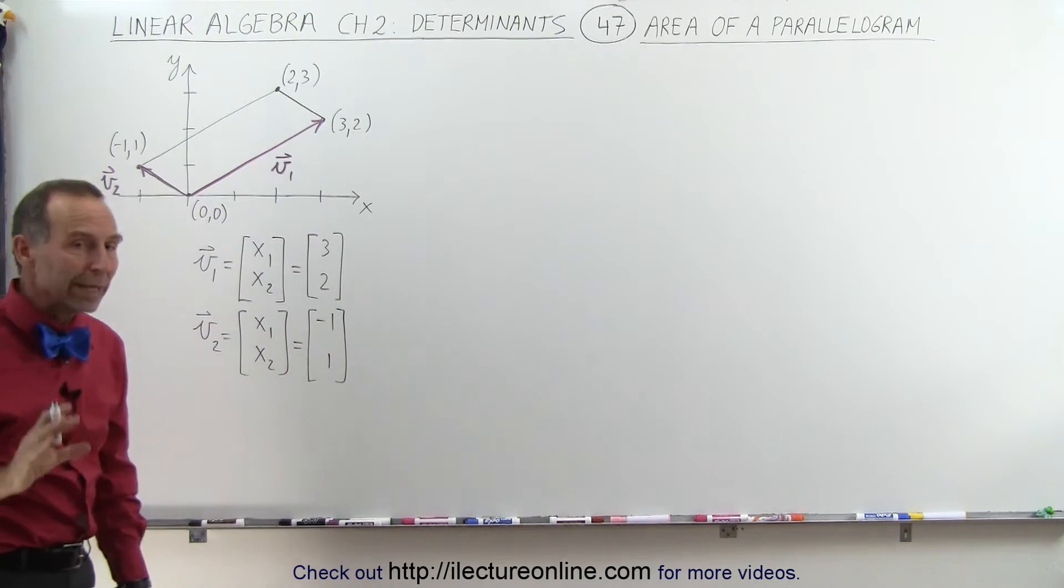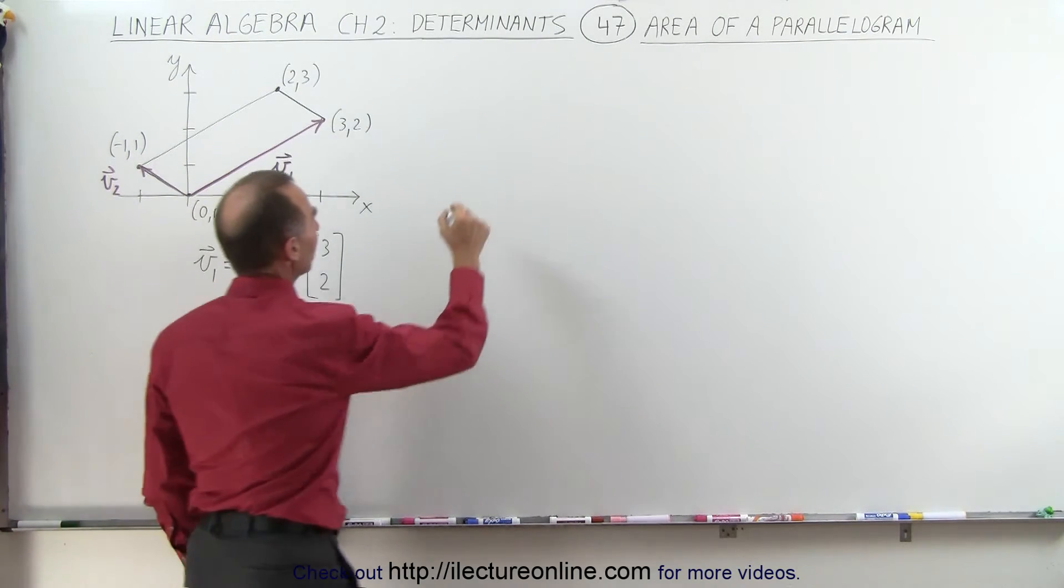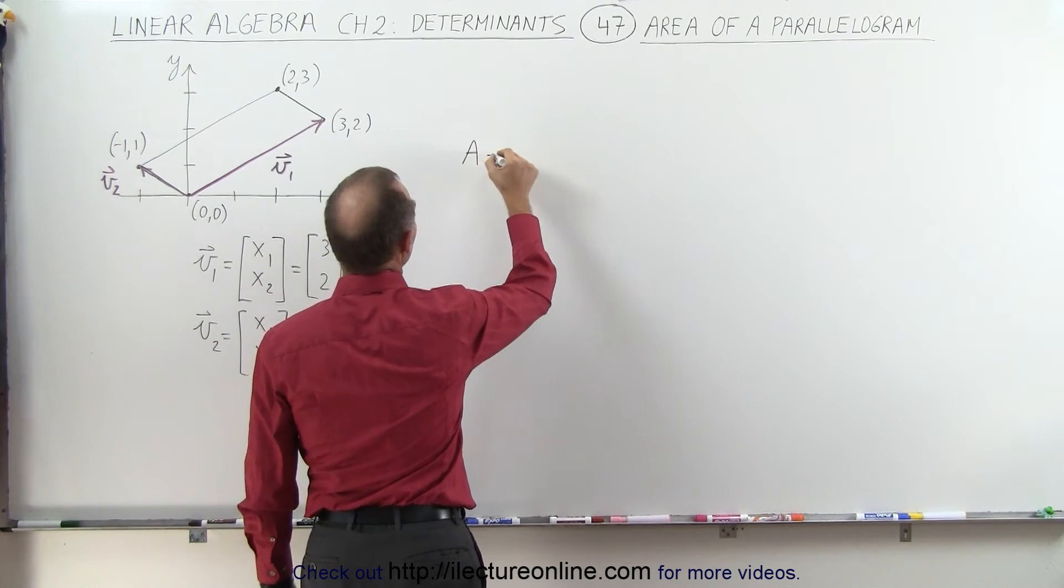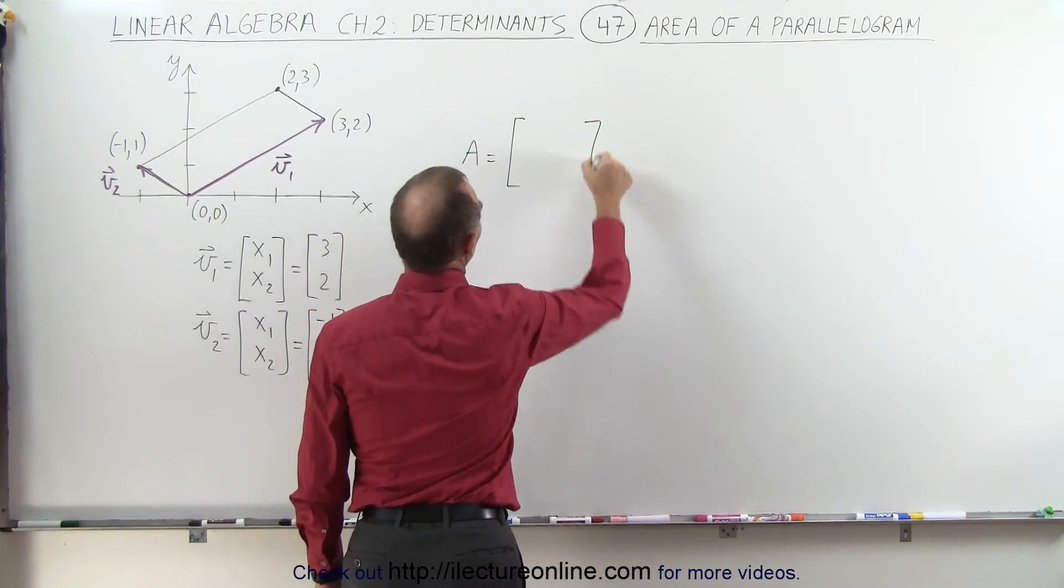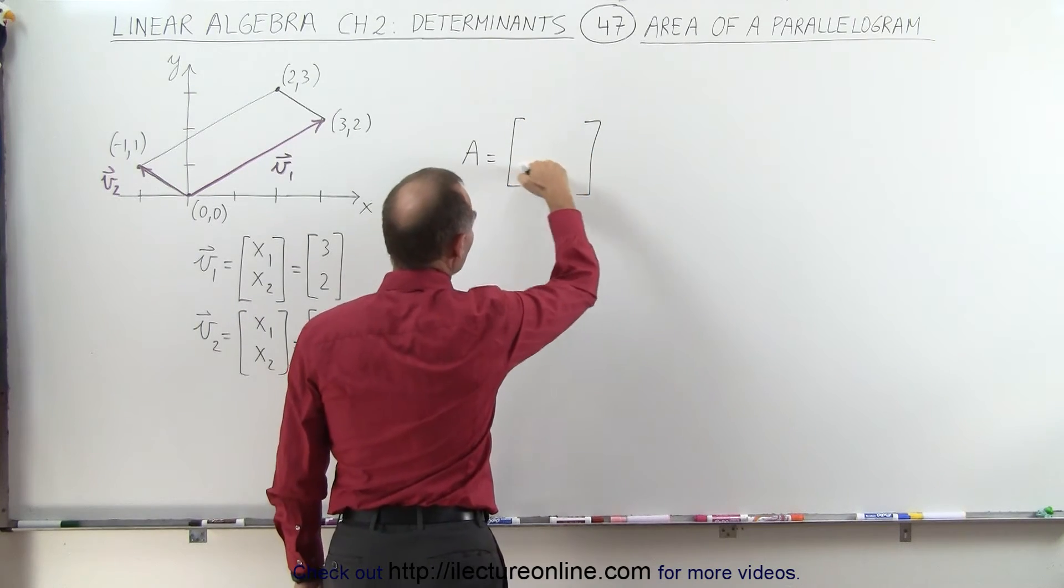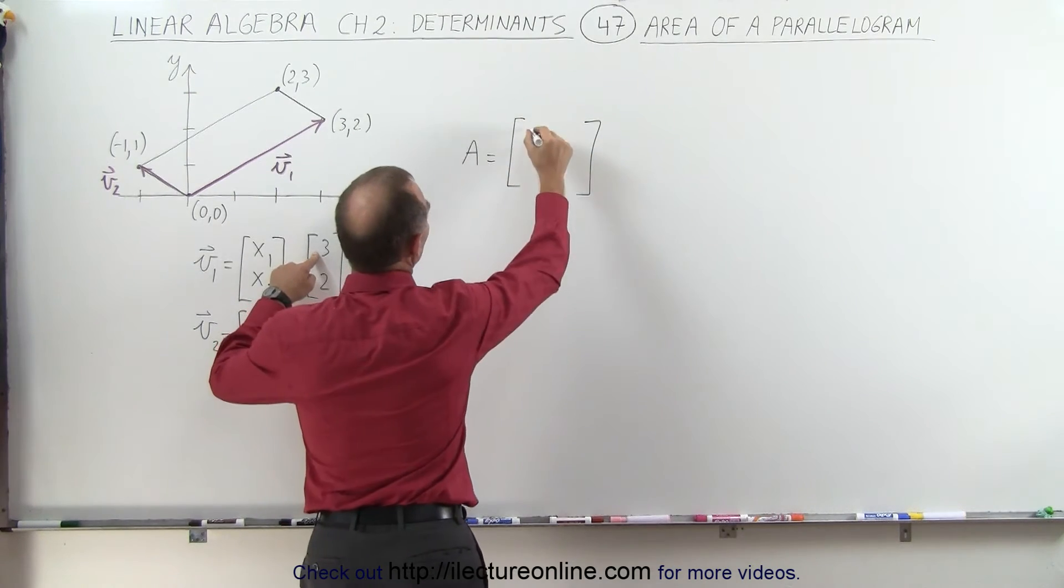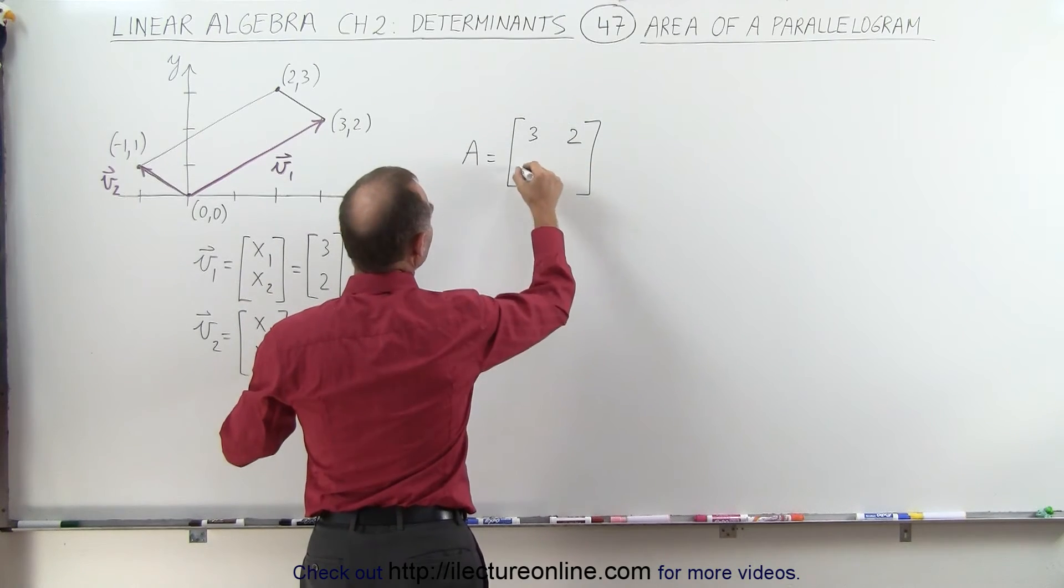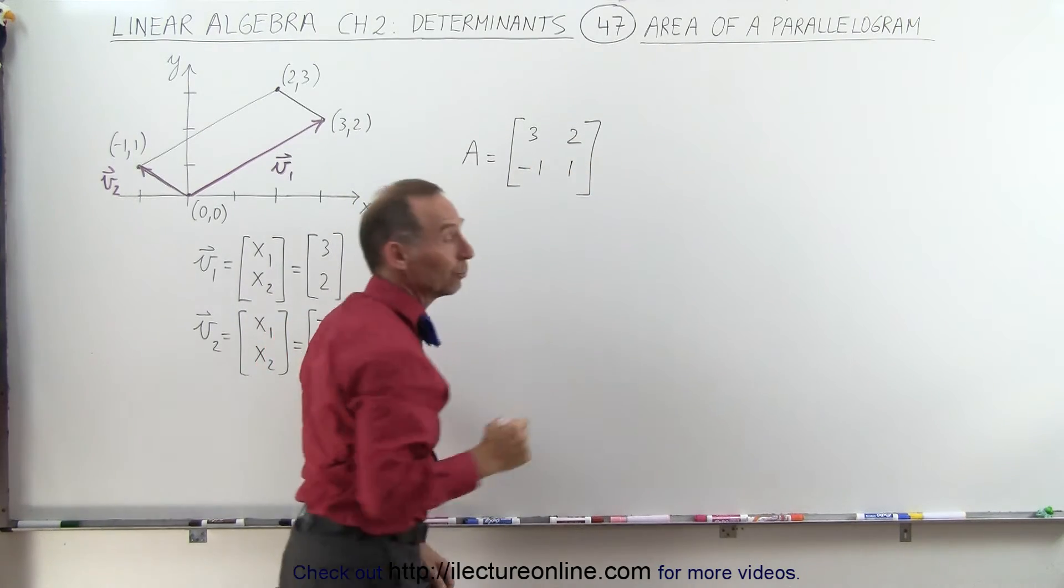We're now going to create the matrix A from those two vectors. We can represent matrix A as being equal to vector 1 in the first row and vector 2 in the second row, which becomes [3, 2] for the first row and [-1, 1] for the second row.